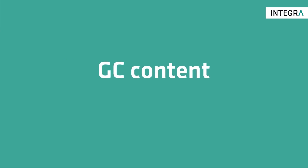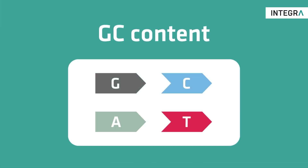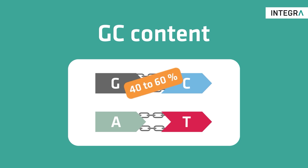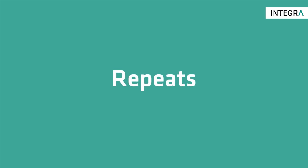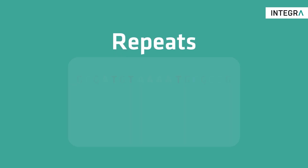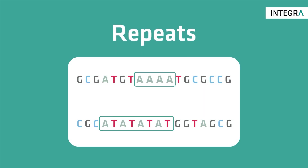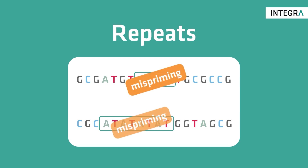GC bonds are harder to break than AT bonds because GC base pairs are linked by three hydrogen bonds and AT base pairs by two. This means that a higher GC content ensures a more stable binding between the primers and the template DNA. The optimal GC content of a primer lies between 40 and 60 percent.